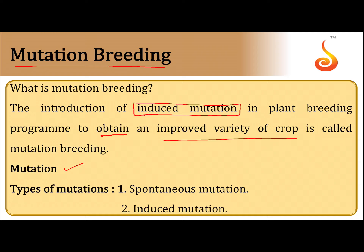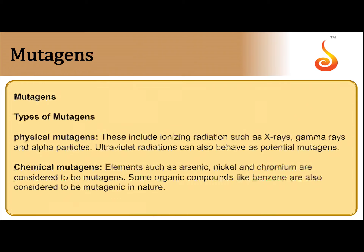A sudden change that takes place in the genetic material is called mutation. Mutations are classified into two types: natural mutation, otherwise called spontaneous mutation, and artificial mutation, otherwise called induced mutation, man-made mutation, or anthropogenic mutation.